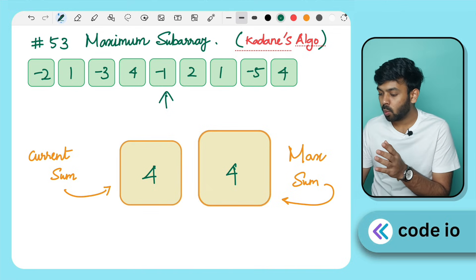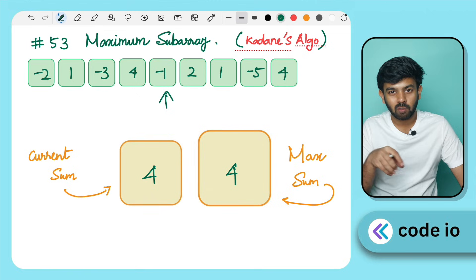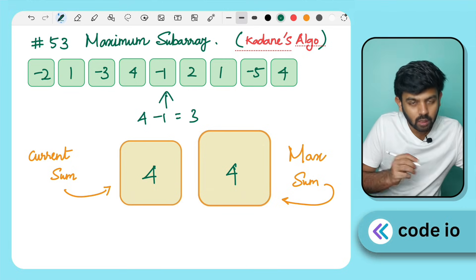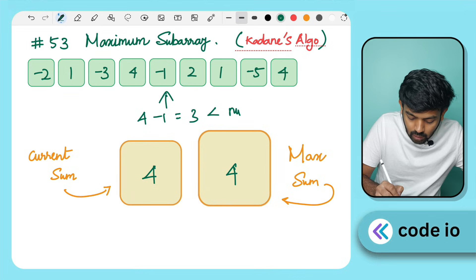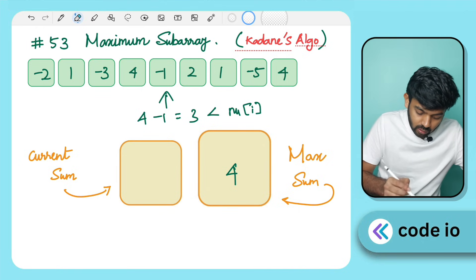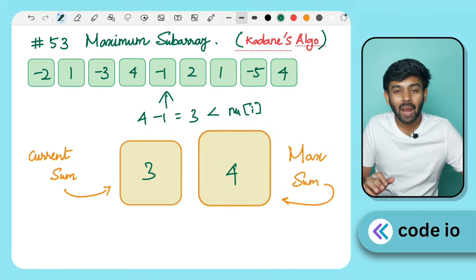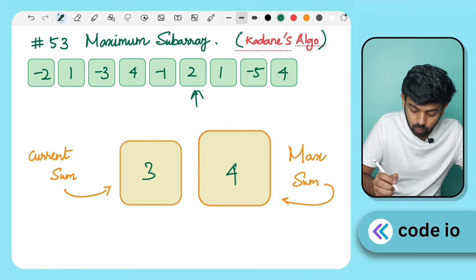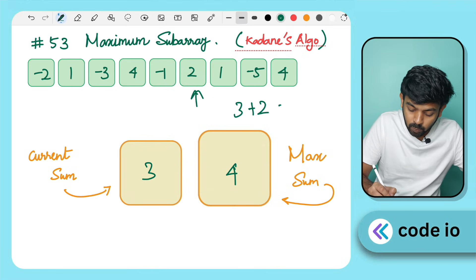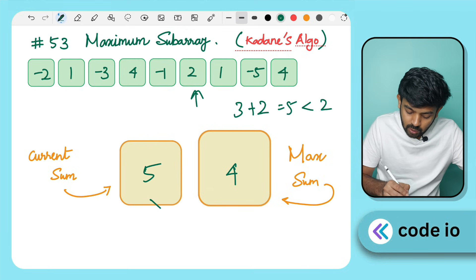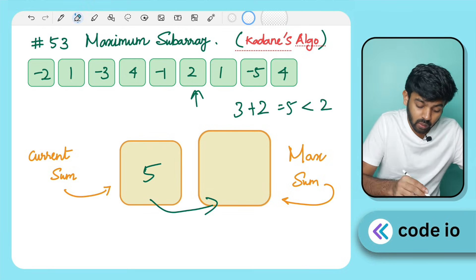Let's check the code. In the next iteration the element is minus 1. We add: 4 plus minus 1 equals 3. Is 3 less than minus 1? No, so CurrentSum becomes 3. MaxSum stays at 4. Next element is 2: 3 plus 2 equals 5. Is 5 less than 2? No, so CurrentSum becomes 5. Is 5 greater than 4? Yes, MaxSum is updated to 5.